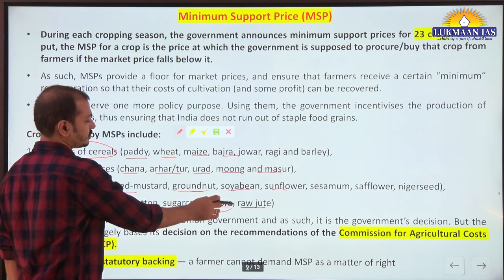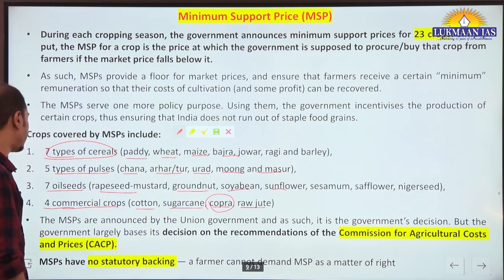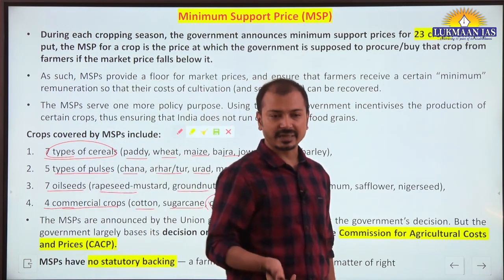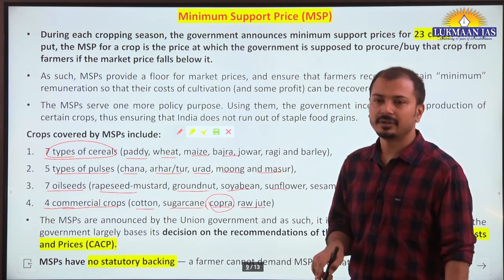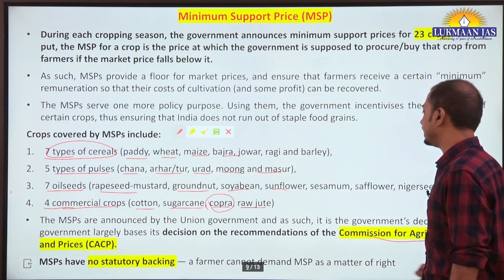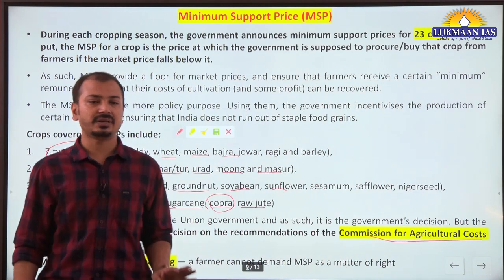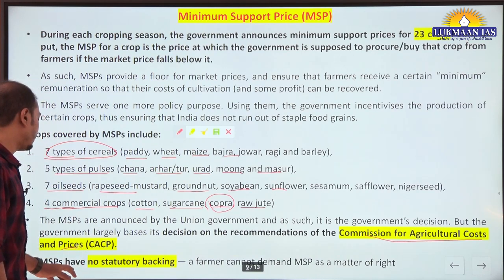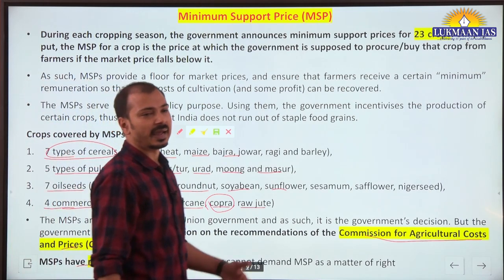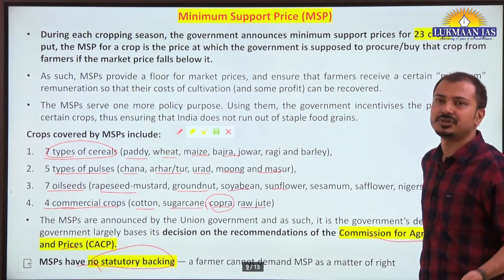Copra is the dried coconut. MSP is announced by the government - the final decision is taken by the government on the recommendation of the Commission for Agricultural Costs and Prices (CACP), which is a statutory body. However, MSP has no statutory backing - it is not the statutory right of farmers to demand MSP. It is an executive decision.